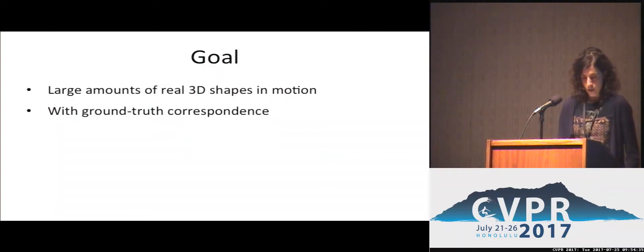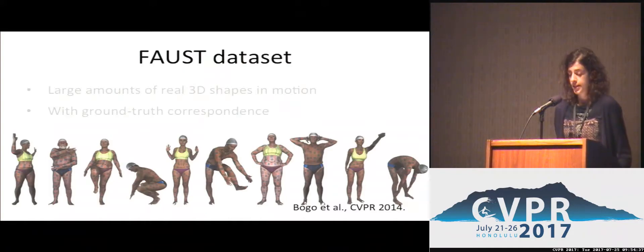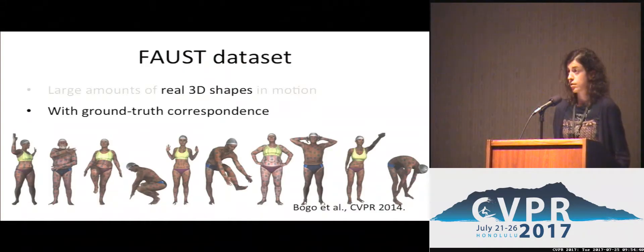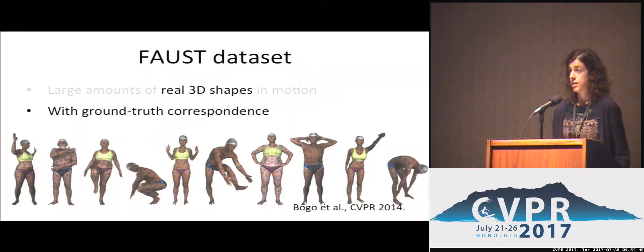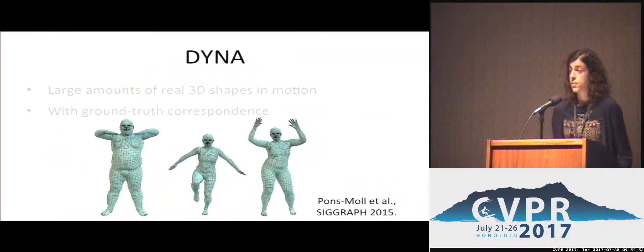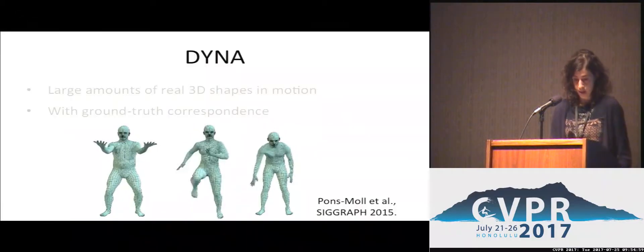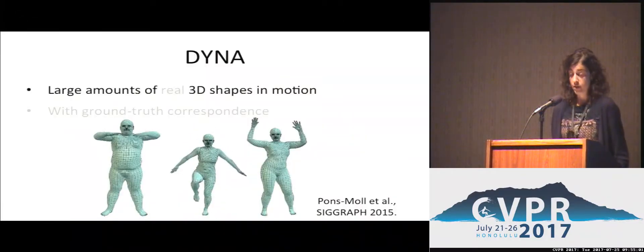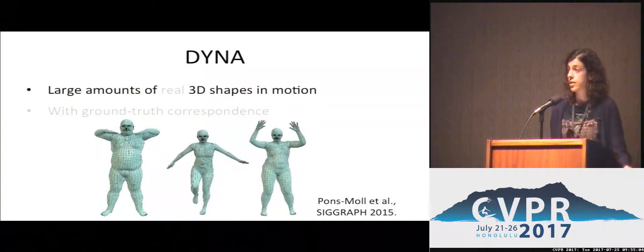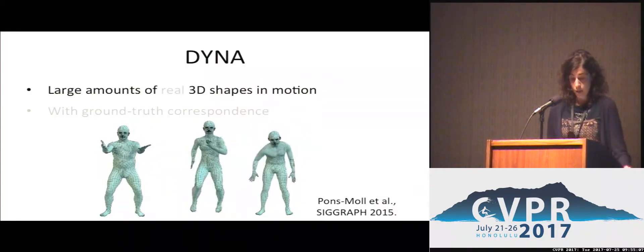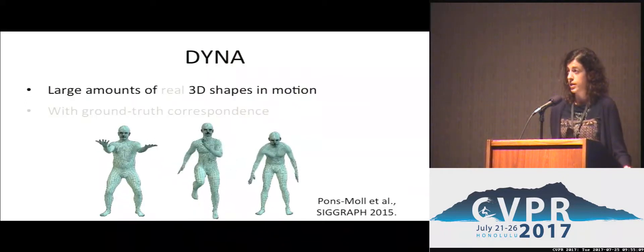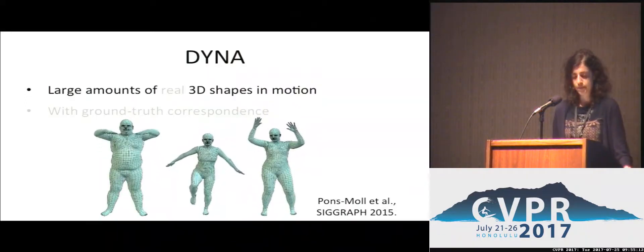Do we already have something like this? For example, we have the FAUST dataset. FAUST collects real scans of human bodies with ground truth correspondence. However, here we have only static poses and only 300 scans, plus 100 ground truth registrations. Much more data is provided by Dyna, which is a dataset built to learn a model of soft tissue deformations. Dyna collects more than 40,000 3D meshes obtained by registering sequences of 3D scans. However, their accuracy is not evaluated in any way, so we cannot trust them as ground truth.